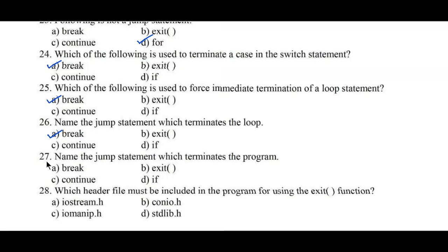Question number twenty-seven: name the jump statement which terminates the program. The control comes out of the entire program, not just the loop. Options: A: break, B: exit, C: continue, D: if. Option B, exit, is the right answer. Exit is the function that forces the program to terminate. Question number twenty-eight: which header file must be included for using the exit function? Option A: iostream.h, B: conio.h, C: iomanip.h, D: stdlib.h. Option D, stdlib.h, is the correct header file for the exit function. That's all in this video — thank you for watching, see you in the next video.